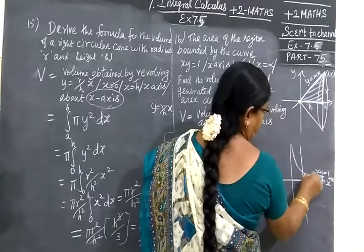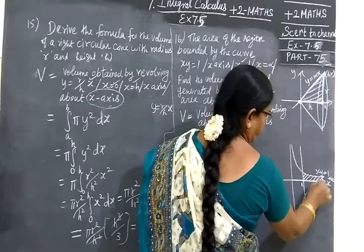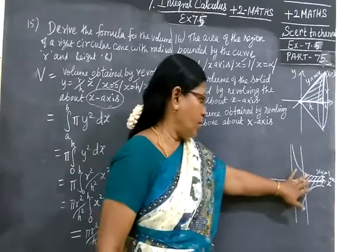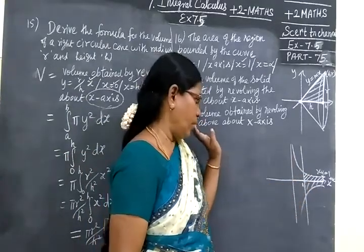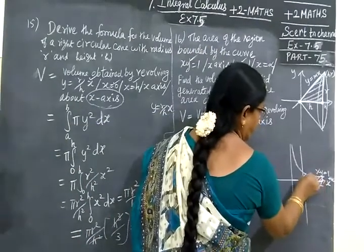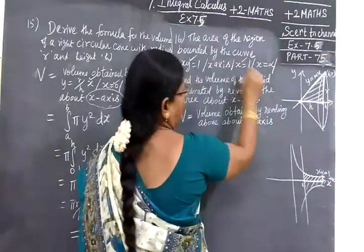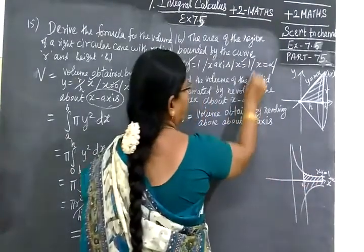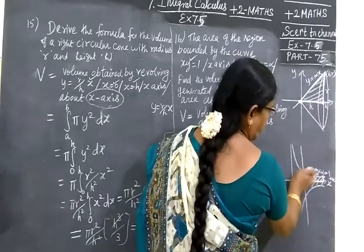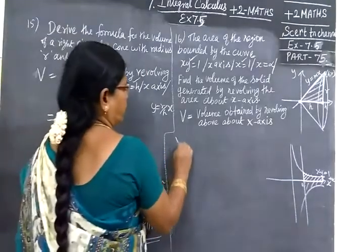We are going to find this region. The area covered by this region when it is revolved. This is revolved. When we revolve this region, we are going to find the volume. Once again, xy equals 1. This is xy equals 1. Then the x-axis. Then x equals 1. X equals infinity, a line parallel to the y-axis.